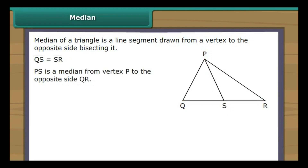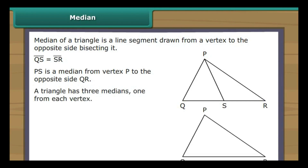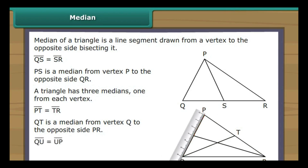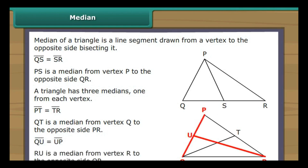A triangle has three medians, one from each vertex. We draw a line segment from Q to cut PR into two equal halves at point T; therefore QT is a median from vertex Q to the opposite side PR. We draw one more line segment from R to cut QP into two equal halves at point U; therefore RU is a median from vertex R to the opposite side QP.